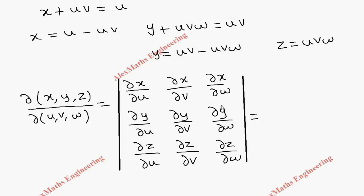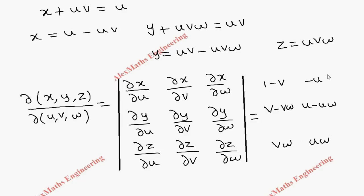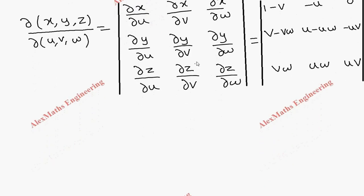Filling in the elements: differentiating x = u - uv with respect to u gives 1 - v; y = uv - uvw with respect to u gives v - vw; z = uvw with respect to u gives vw. With respect to v: ∂x/∂v = -u, ∂y/∂v = u - uw, ∂z/∂v = uw. With respect to w: ∂x/∂w = 0, ∂y/∂w = 0, ∂z/∂w = uv.